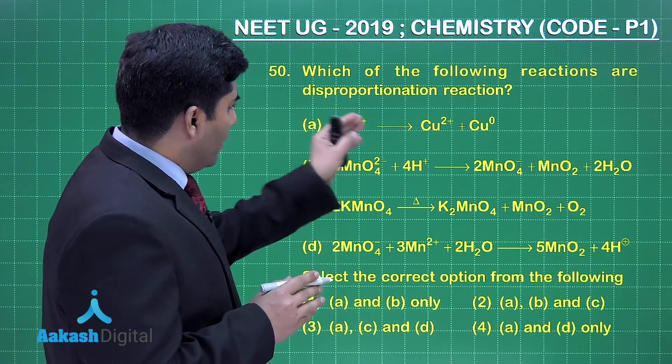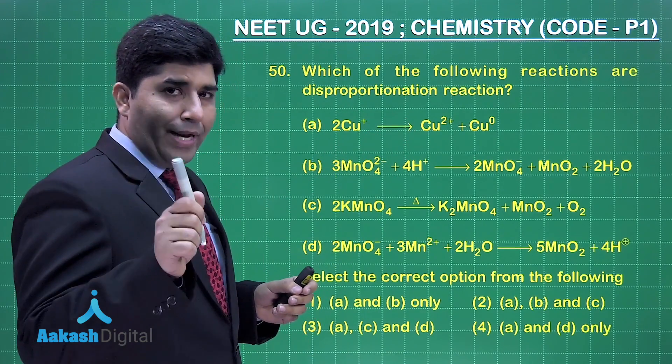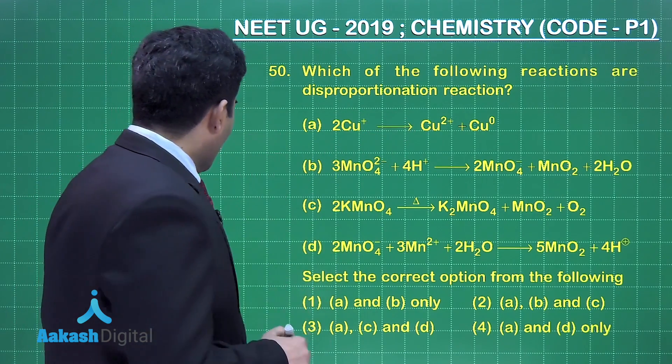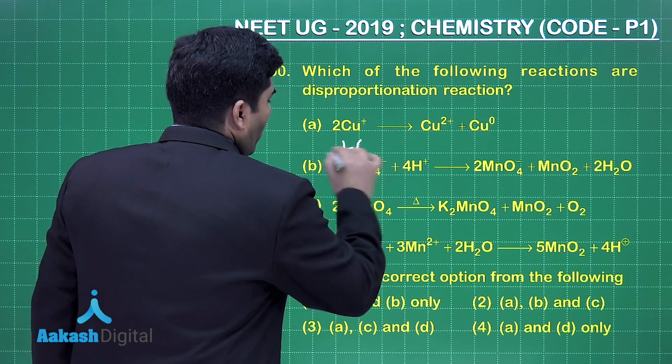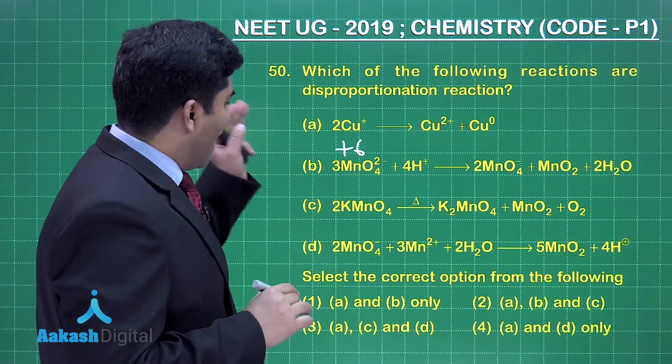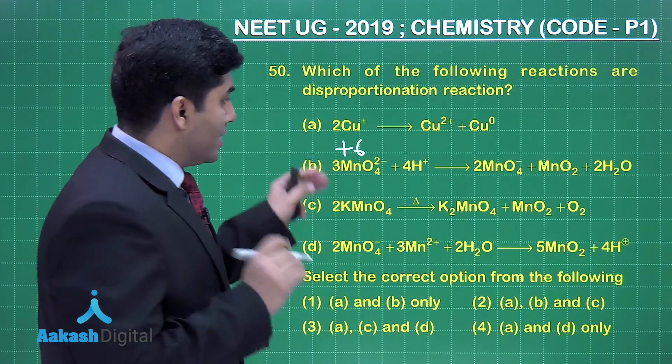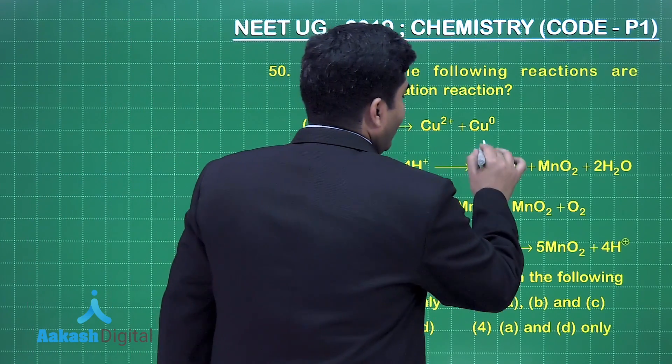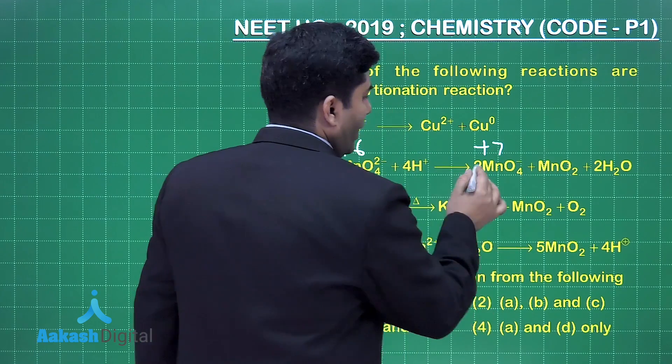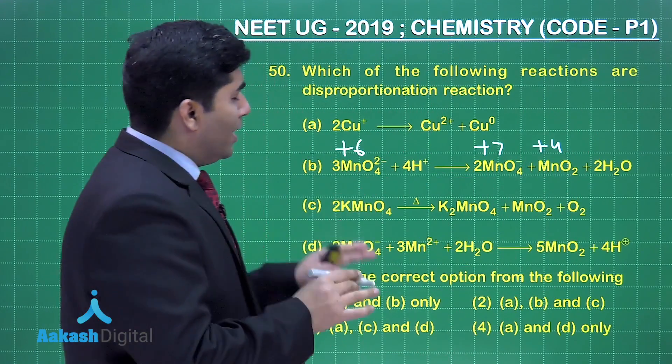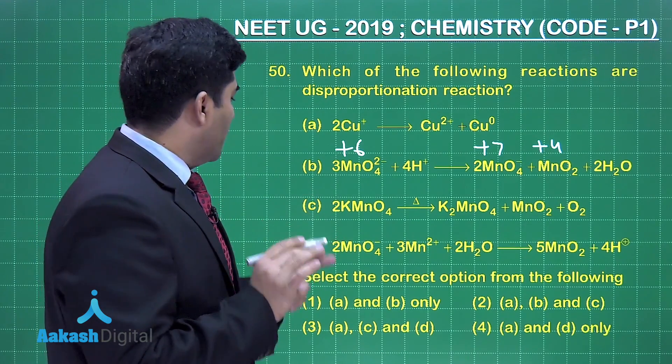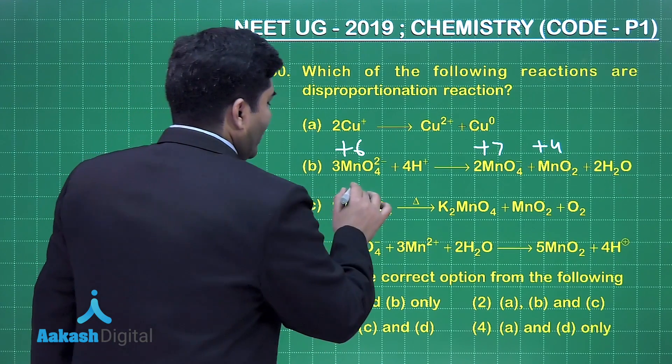This is disproportionation reaction. Second one, if you find out the oxidation number of manganese in manganate ion it is +6, in permanganate ion it is +7 means it is oxidation, and in MnO2 it is +4, it is reduction. This is also a disproportionation reaction.